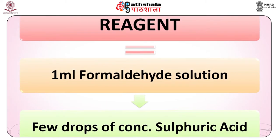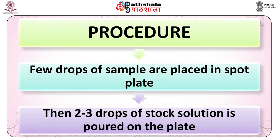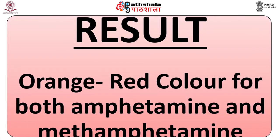Screening tests. First is the Marquis reagent test. Preparation: to 1 ml of formaldehyde solution, a few drops of concentrated sulfuric acid is added and stock solution is prepared. Procedure: a few drops of sample are placed in a spot plate, then 2 to 3 drops of stock solution is poured on the plate. Result: orange to red color for both amphetamine and methamphetamine.